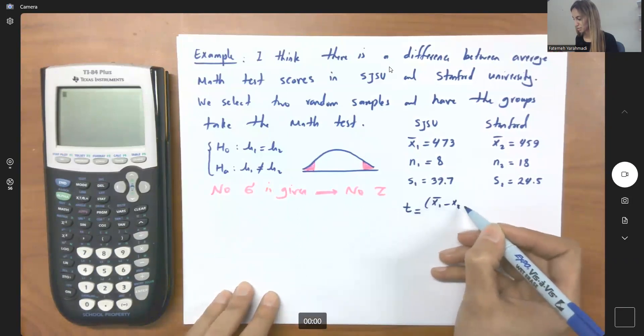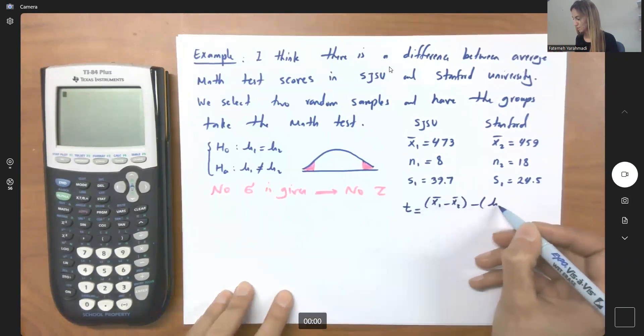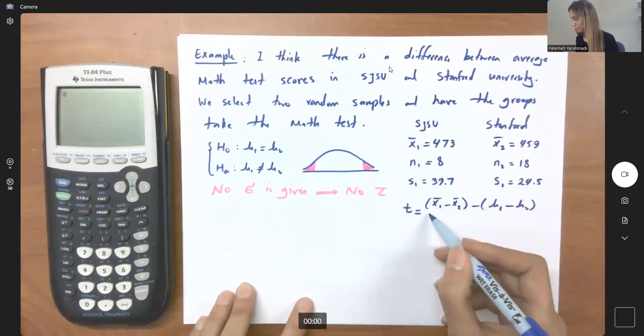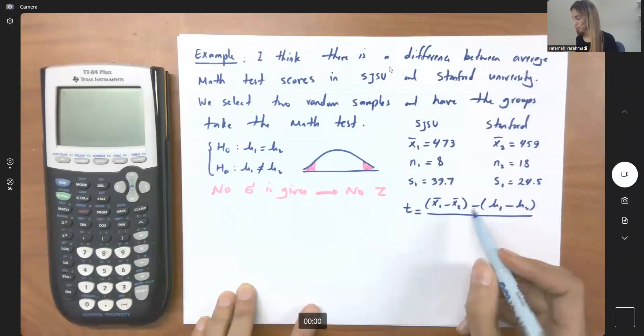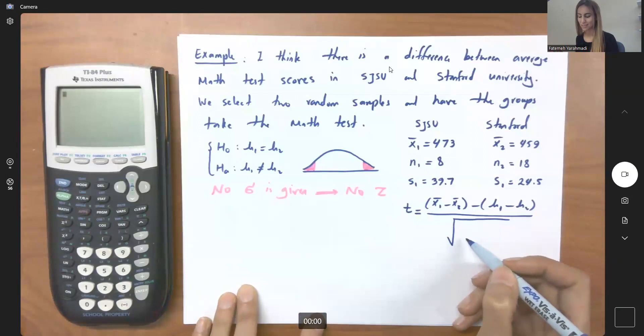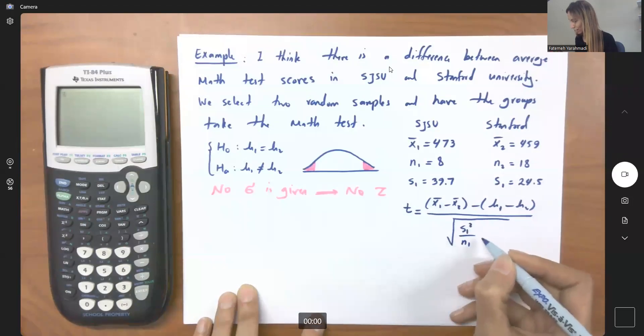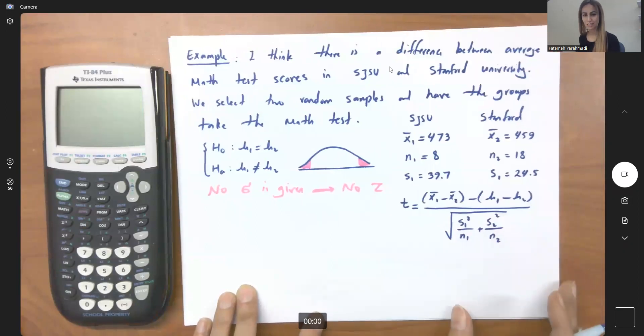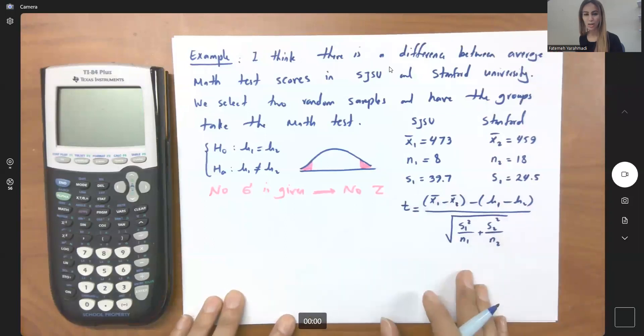You have the difference between sample means minus the difference between population means divided by the square root of, instead of sigma, we're going to use s, sample standard deviation: s1 squared over n1 plus s2 squared over n2. We're going to punch all of this information into our formula and calculate t.